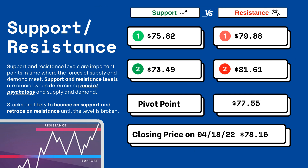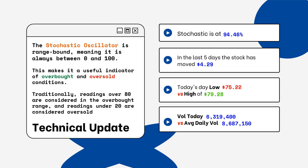Support and resistance levels are very important because they let you know where supply and demand are meeting. On the right side you'll see three support levels and also three resistance levels. These are areas that you want to watch when looking at this particular stock. Stocks typically bounce at support levels and resist at resistance levels, meaning they'll retrace from that top level.